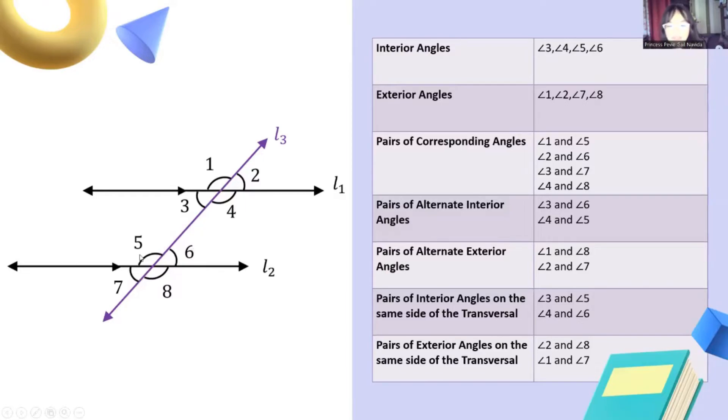The pairs of alternate exterior angles are angle 1 and angle 8, and angle 2 and angle 7. The pairs of interior angles on the same side of the transversal are angle 2 and angle 8, and angle 1 and angle 7. The pairs of exterior angles on the same side of the transversal are angle 2 and angle 8, and angle 1 and angle 7.